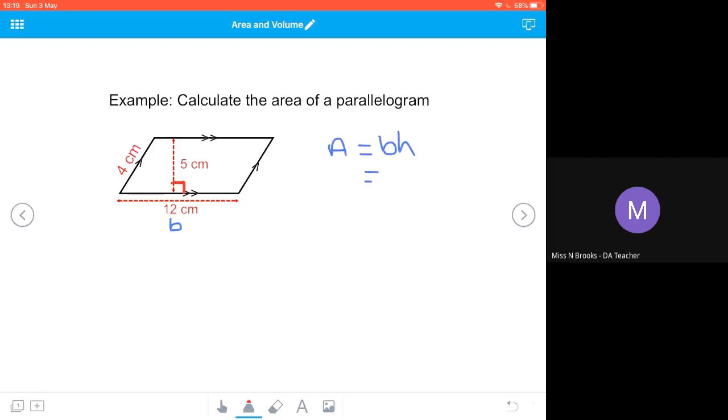But the height that I want to use has got to be the one that's at right angles. So that's vertical or perpendicular to my base. So I'm going to use the five centimeters. I do not want to use that four centimeters over there because I do not want to use the sloping side, it's got to be the right angled height.